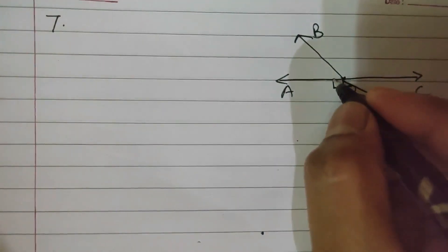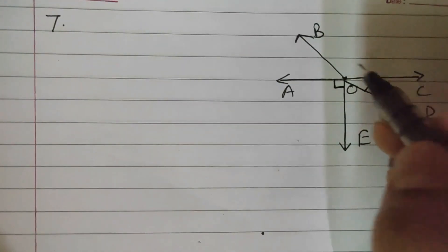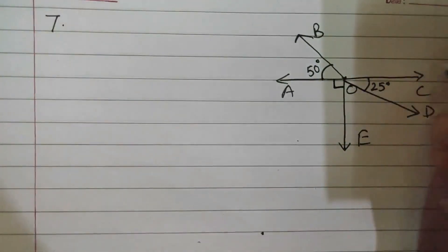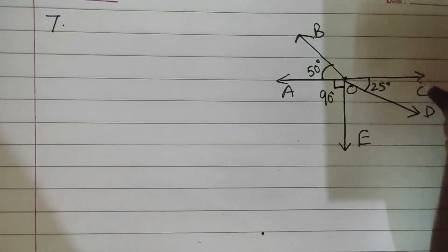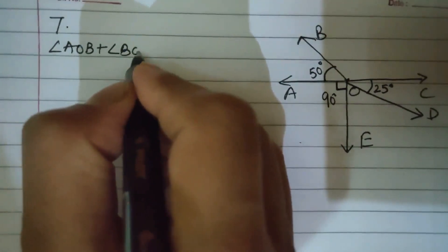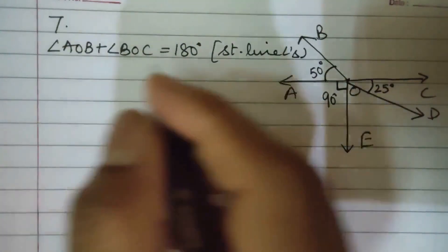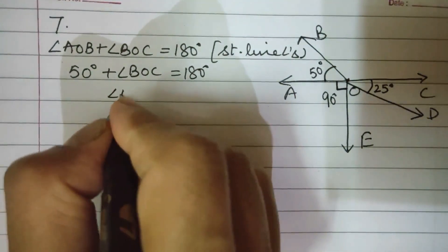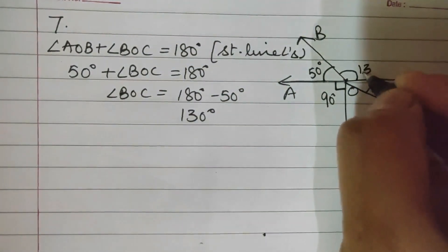Angle AOE is given as 90 degrees, angle COD is given as 25 degrees, angle AOB is given as 50 degrees, and angle AOE is 90 degrees. First, find angle BOC. Since AOC is a straight line: angle AOB plus angle BOC equals 180 degrees. So 50 plus angle BOC equals 180 degrees, giving angle BOC equals 130 degrees.